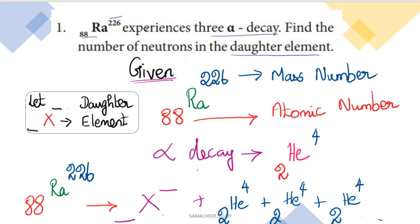What do we do? We write the chemical equation for the particular reaction. First step: the mass number of the given element is 226 — the top number is mass number, which is number of protons plus number of neutrons. The atomic number of the parent element is 88. Alpha decay is represented as 2He4 — atomic number 2, mass number 4. So 3 alpha decays are represented as 3 × (2He4). Let x be the daughter element, where atomic number and mass number are unknown.